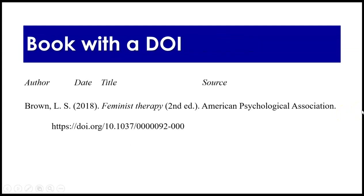Next: a book with a DOI. A DOI is like a super golden-strength URL. It stands for digital object identifier and is a permanent anchor for your source. URLs and HTTP addresses can change; DOIs do not. So if they're available, use them. In this case, the author is LS Brown. This book, published in 2018, is entitled 'Feminist Therapy' — capital F, not capital T — italicized, second edition, which is important because editions change. The source is the American Psychological Association, the publisher, and then the DOI.